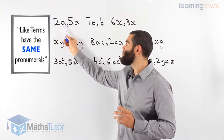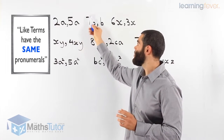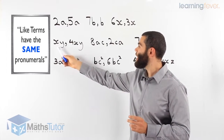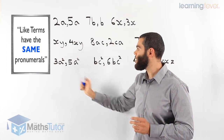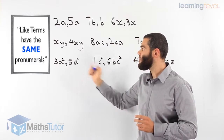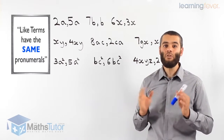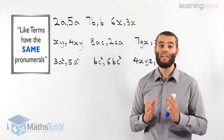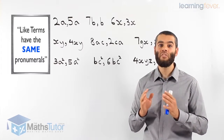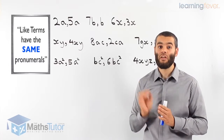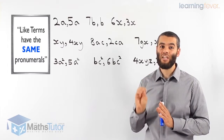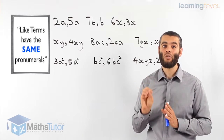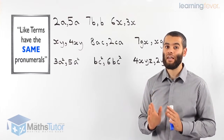What is a term? 2a, 5a, 7b, b, 6x, 3x, 4xy, 3a squared, 5a squared — these are all terms. To add or subtract, we have to make sure we have like terms, meaning the same terms, terms that have the same pronumerals. Very important. If you want to learn anything in algebra that is so important, it's this: you can only add or subtract like terms.